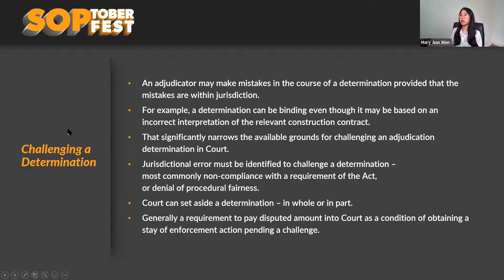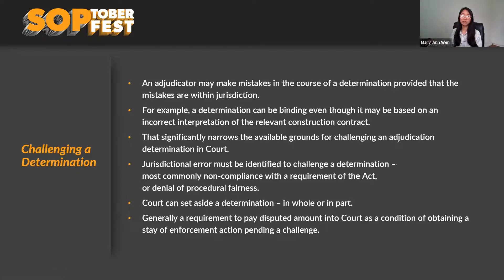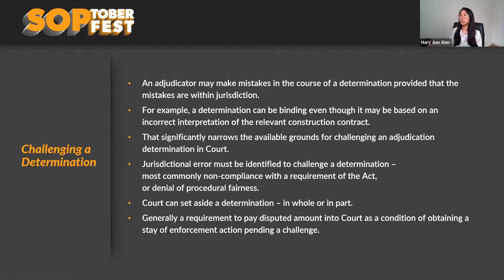If you want to challenge a determination, you are entitled to do so. Under section 22(5), the adjudicator can correct clear errors — accidental slips, omissions, material miscalculations, defects in form — on their own initiative or on application from parties. A determination can be binding even though it may be based on an incorrect interpretation of the relevant construction contracts. This narrows the available grounds for challenge — you can only challenge a determination if there is a jurisdictional error.